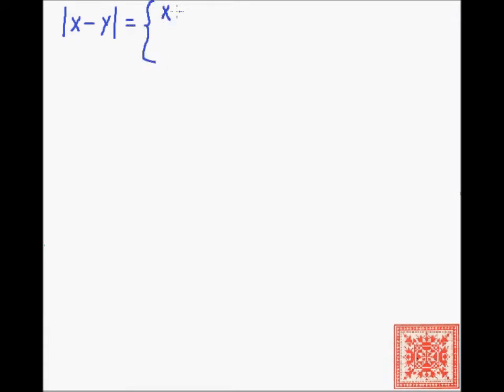The absolute value of x minus y equals x minus y if x is greater than or equal to y, and y minus x if x is less than y.